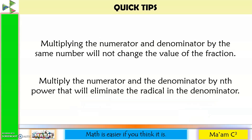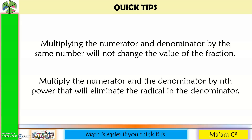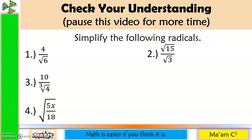Quick tips: Multiplying the numerator and denominator by the same number will not change the value of the fraction. Multiply the numerator and denominator by the nth power that will eliminate the radical in the denominator. Now it is time to check your understanding — pause this video for more time.